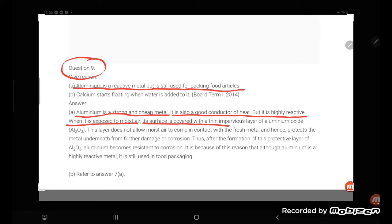Its surface is covered with a thin impervious layer of aluminum oxide, Al2O3. This layer does not allow moist air to come in contact with the fresh metal and hence protects the metal underneath from further damage or corrosion. Thus, after the formation of this protective layer Al2O3, aluminum becomes resistant to corrosion.